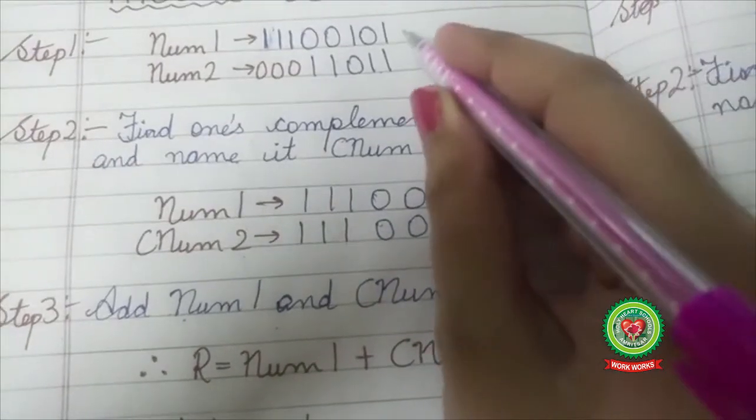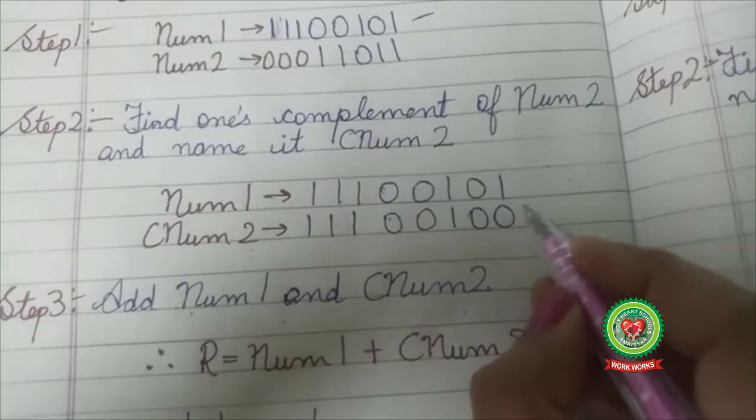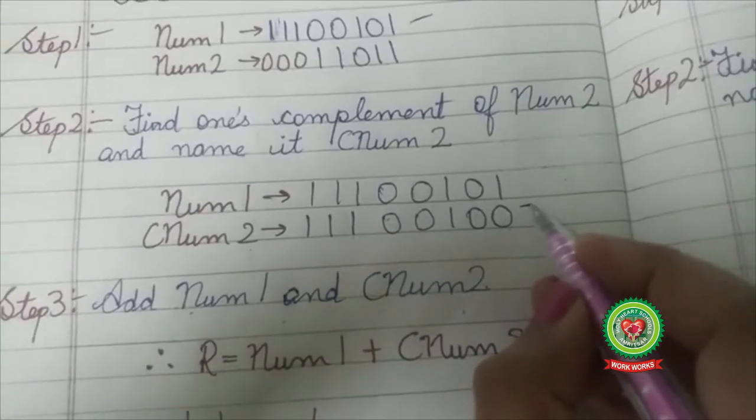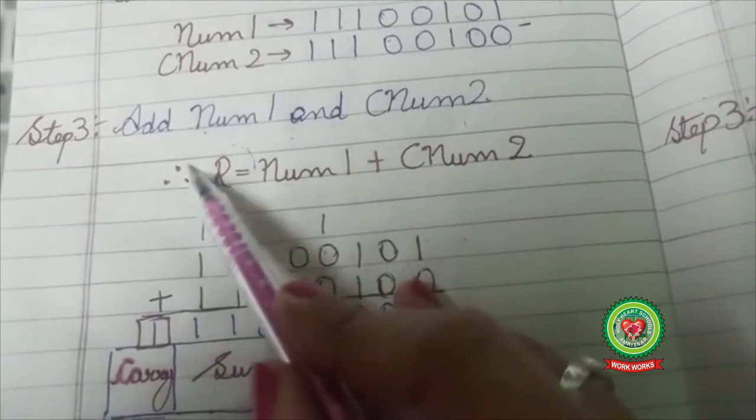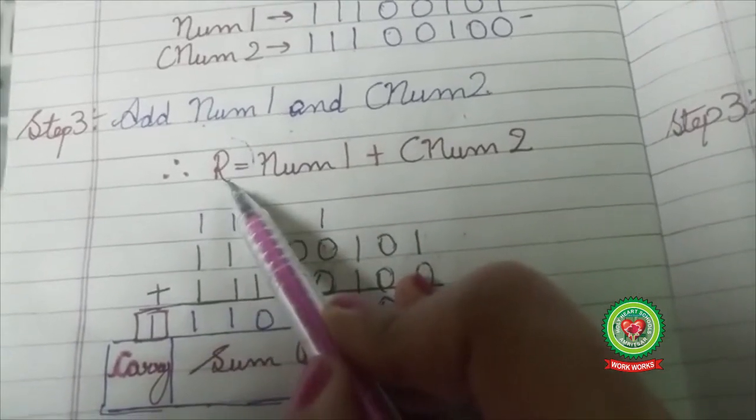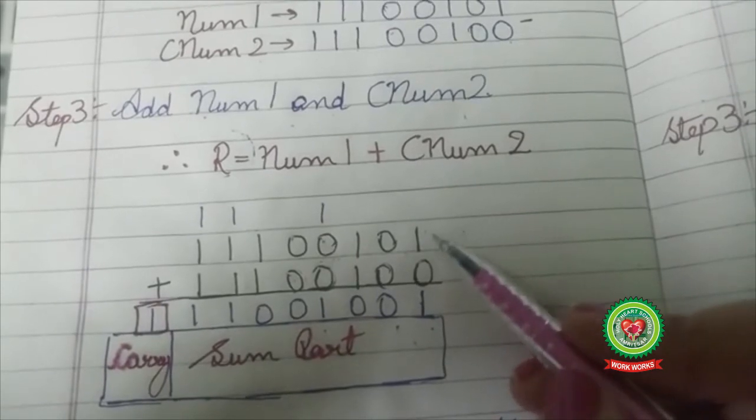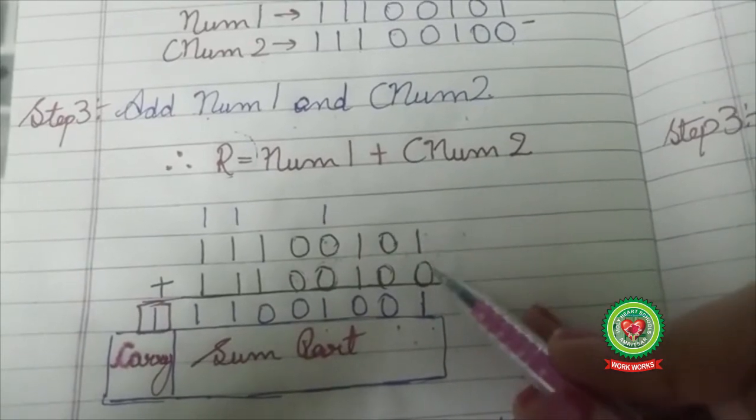Now I will add number 1 and complement of second number and store it in a variable called r. So, by using the binary addition, I have added these two numbers.